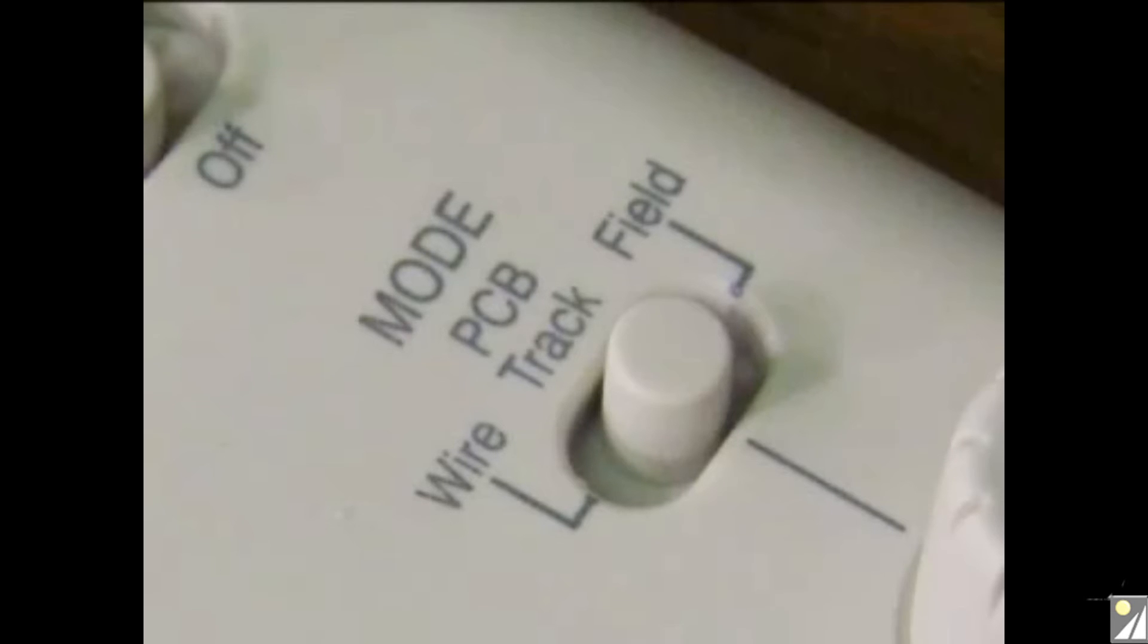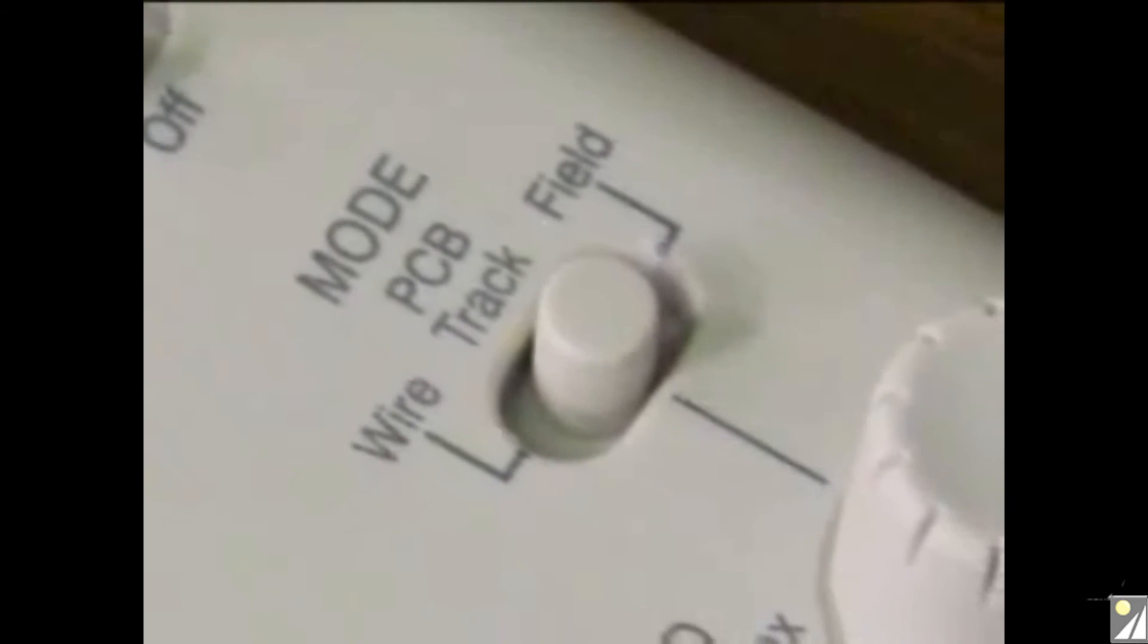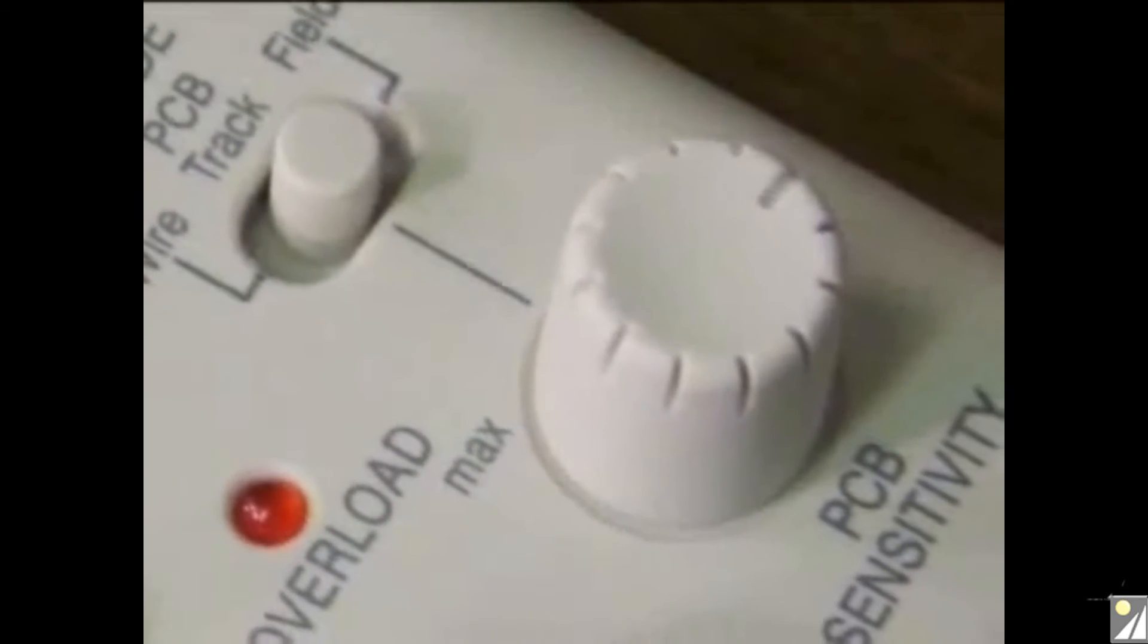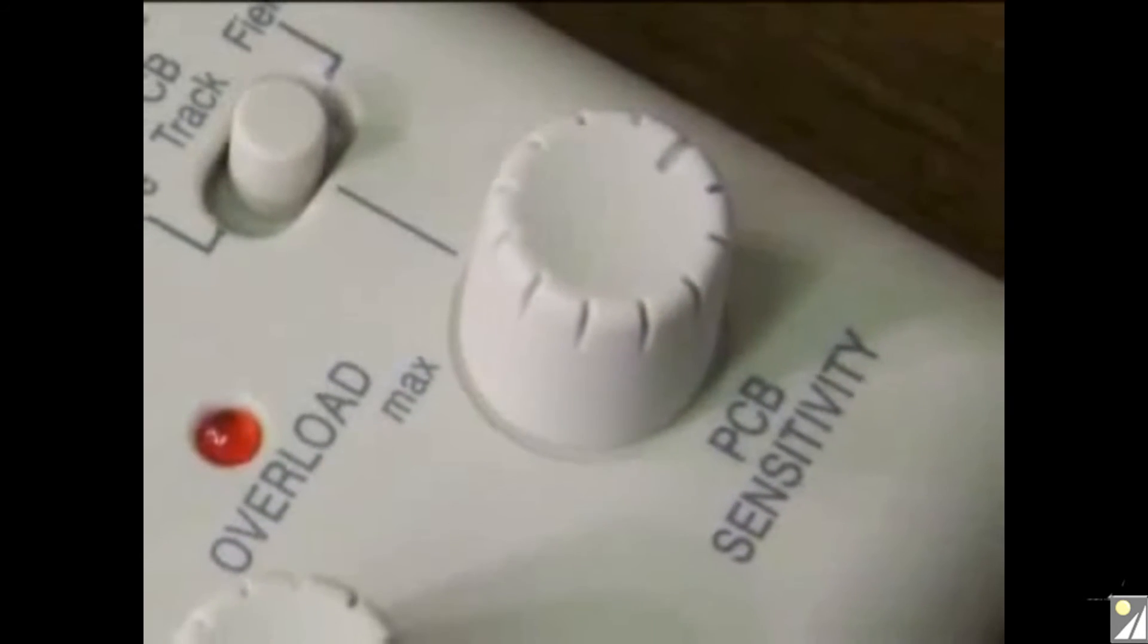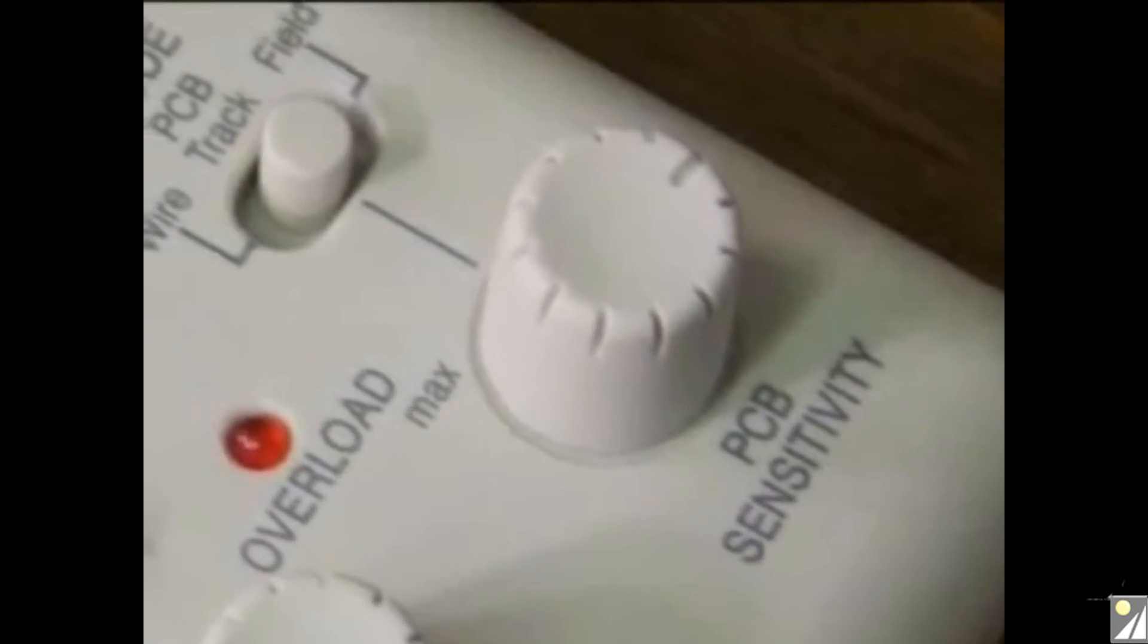You set wire mode when you use the clip-on toroid to measure the current in wire or cable. Below the mode switch is the sensitivity control, which is only active in PCB track mode and is used in conjunction with the calibrator to compensate for different widths of PCB track.